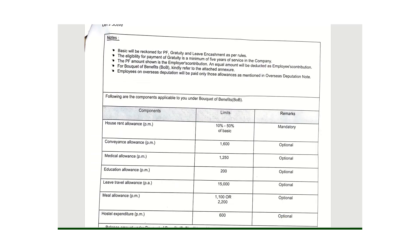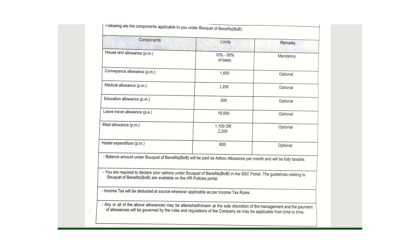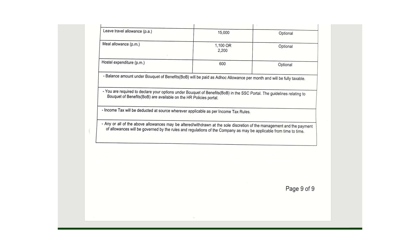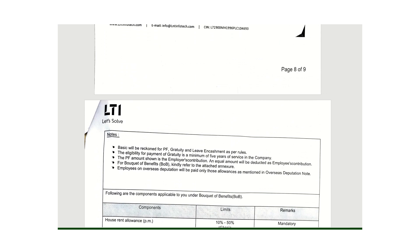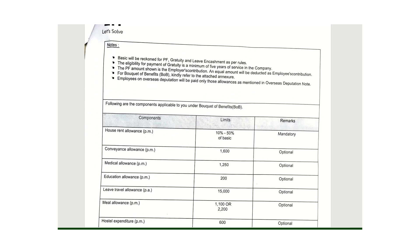Most companies' basic pay will vary based on their company policy. There are mandatory and optional components. HRA is mandatory at 10 to 50 percent of basic pay. Other optional components include convenience allowance, medical allowance, education allowance, LTA, meal allowance, and hostel expenditure. You can pause the video to read through these. Using this, you can compare your offer letter with your current company and find which company provides better benefits.